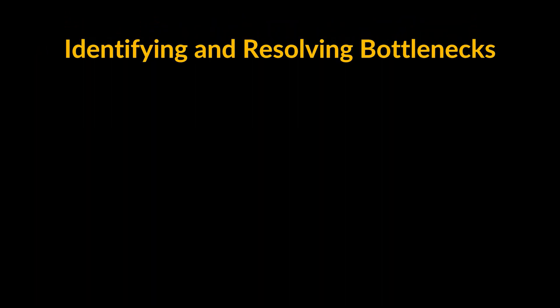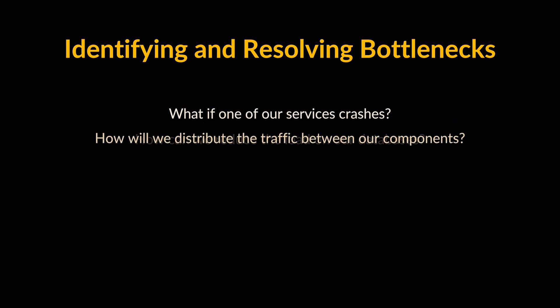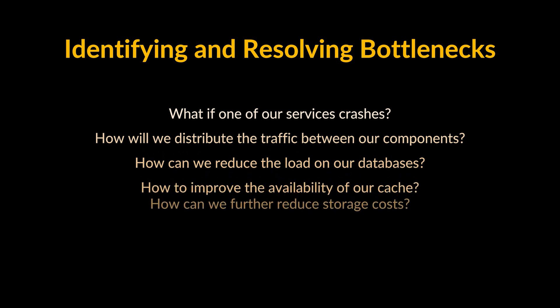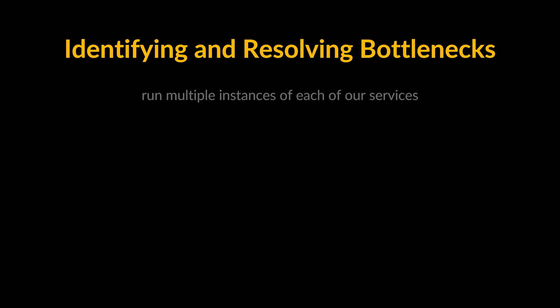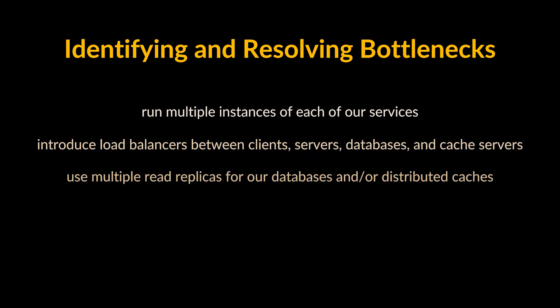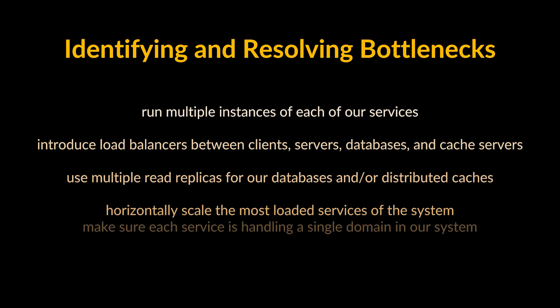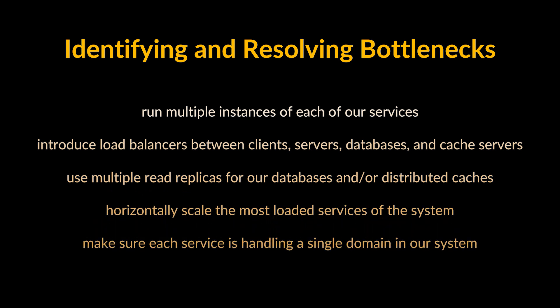In the final part, let's identify and resolve bottlenecks such as single points of failure. Key questions to address: What if one of our services crashes? How will we distribute traffic between components? How can we reduce the load on our databases? How do we improve cache availability? How can we further reduce storage costs? Does any service have too much responsibility? To make our system more resilient, we can run multiple instances of each service and introduce load balancers between clients, servers, databases, and cache servers.